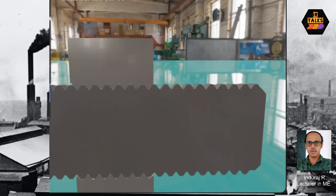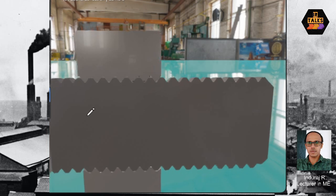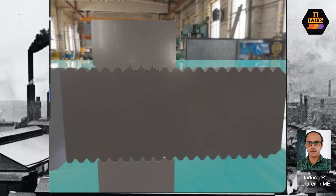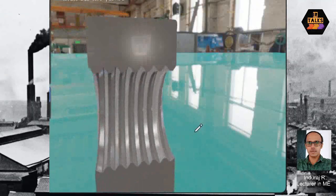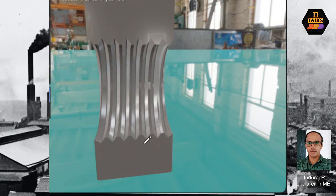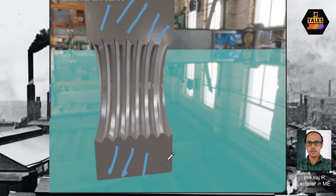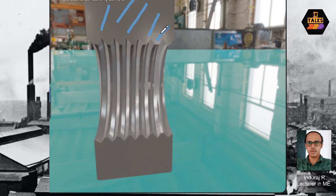In the assembly section view, the bolt is placed and the section is hatched at the bottom. In the case of the bolt, the thread profile line is not hatched — it remains as the thread profile. In the case of the nut, full hatching is applied, and the thread profile is not shown as hatching.